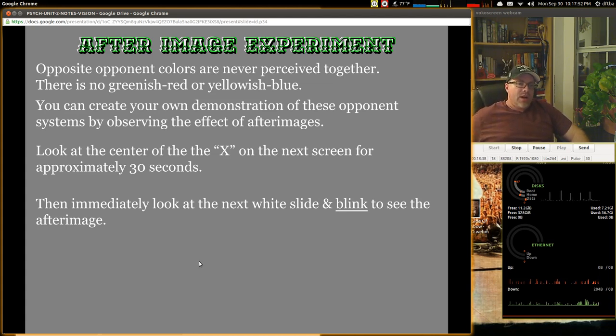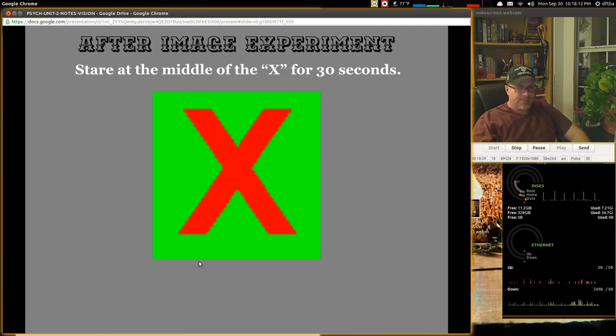And you probably have seen this kind of thing before. So you'll look at the center of the X on the next screen for about 30 seconds. So to do that, you're going to need to pause the video because I'm not going to wait for 30 seconds. Then immediately look at the next white slide. You're going to blink a few times to then see the after image when you open up your eyes and you stare at the screen. So let's try it. There's the X. Pause the video, 30 seconds, and then we'll flip it forward.